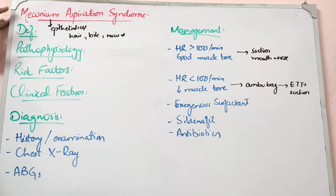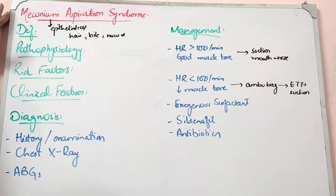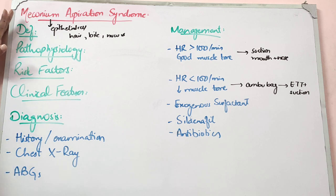In fetal intra-uterine life, the fetus does not eat, so stool does not pass through the gut in the same way. However, the fetus does pass urine, which forms part of the amniotic fluid. After birth, the first stool the child passes is meconium.